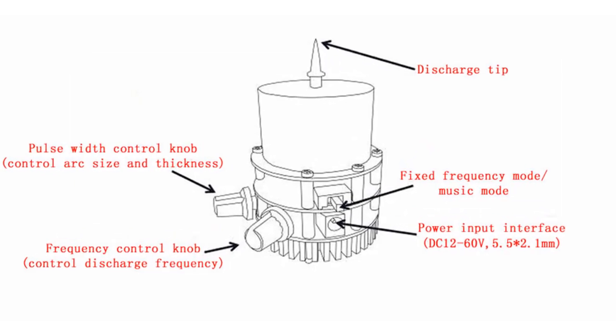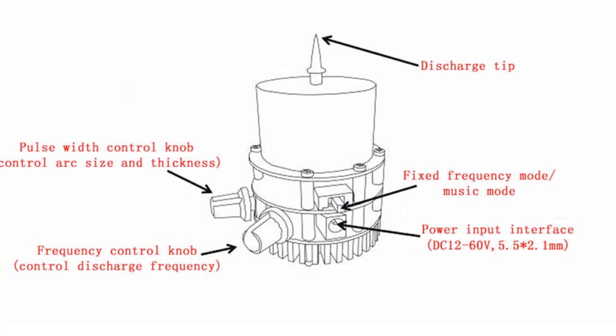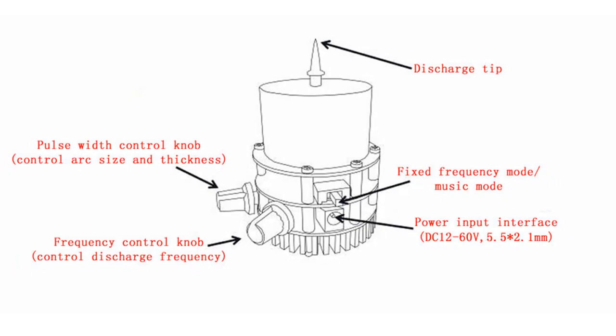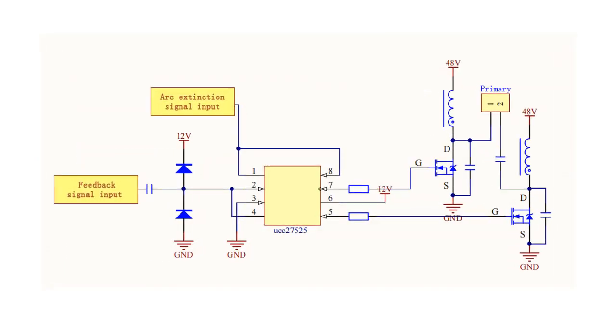A Tesla coil consists of two parts: the primary and secondary coils. The primary coil is connected to the power source, and the secondary coil is wrapped around the primary coil.